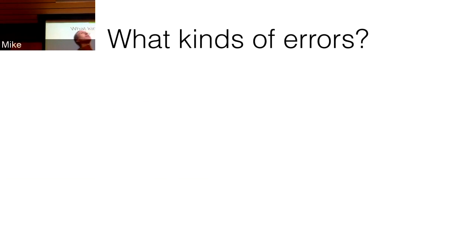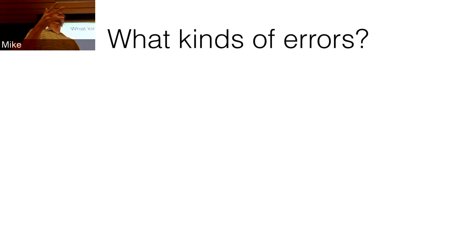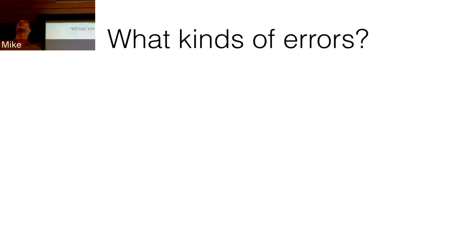Another type is when you break the API of things that other parts of your code were counting on. You wanted to add a new feature and accidentally broke some other code that was already working. You want to find that out as soon as possible. Compatibility with other packages is also important — that's item three.